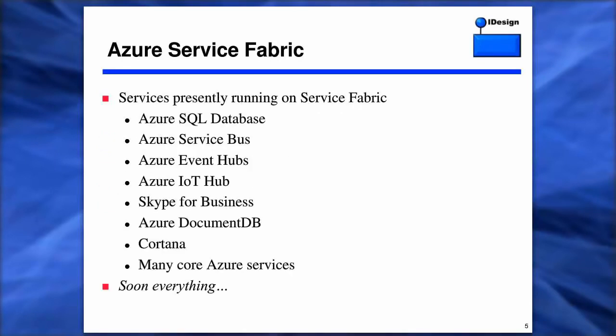This is just a small list of some of the things that are actually built on top of the fabric today: Azure SQL, the bus, event hubs. If you think of something as large as Azure SQL built on top of the fabric, now you're talking about mature technology that's supporting 100K-plus instances of SQL databases. And as they roll out Pass 2.0, soon everything will be built on top of it.